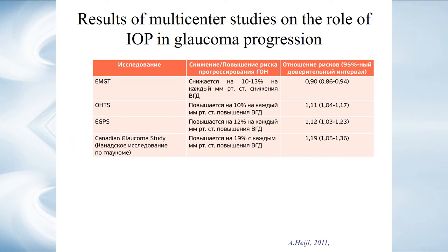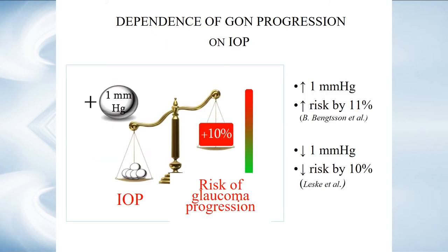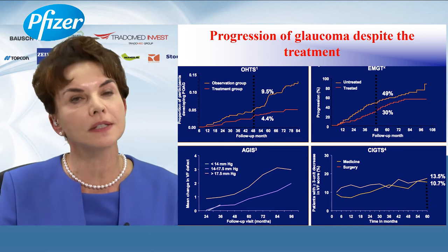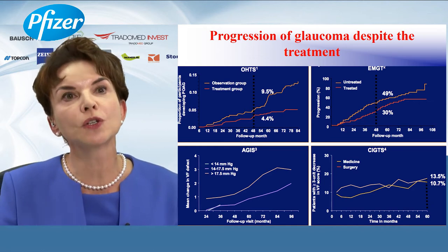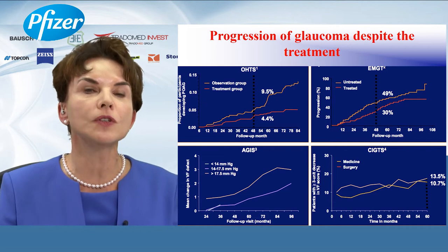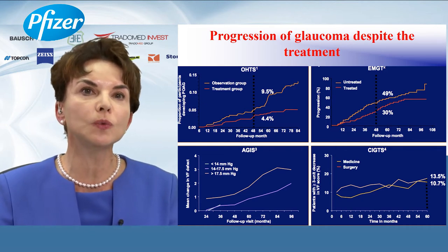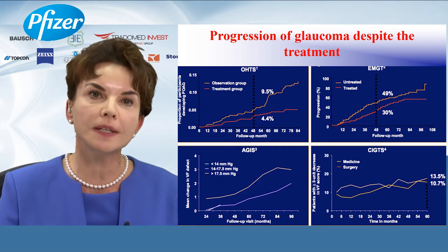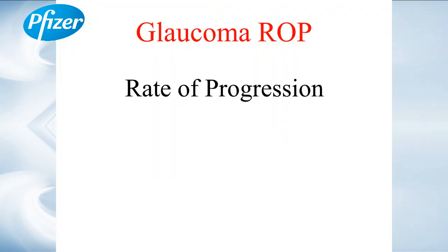Therefore, there is a postulate that we use today: each millimeter of decreased IOP decreases the risk of progression by 10%, and sometimes even by 19%, based on some published data. It was a very important discovery. We've learned that we should take care of elevated IOP, but there's always an intrigue. All trials show that groups with progression and groups without progression are very similar. It's clear that adequate control of IOP is not sufficient to prevent further progression.